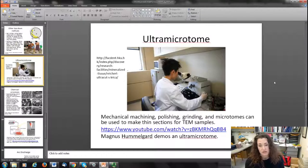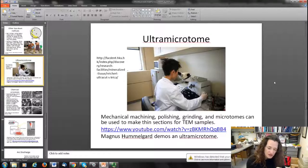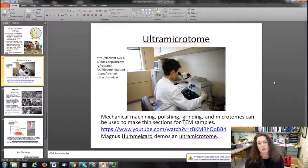You can use mechanical machining, polishing, grinding, and then something called a microtome to make these thin sections. There's another video where Magnus Hummelgaard demos an ultra-microtome used to prepare samples for the transmission electron microscope. Basically in a microtome, you have a diamond knife that can cut really thin sections of a sample that can then be mounted onto a TEM grid.